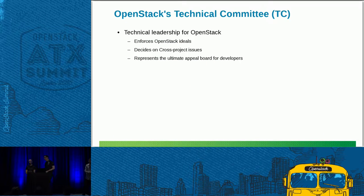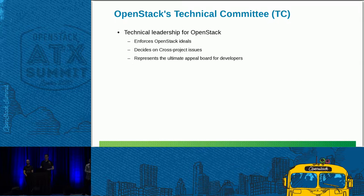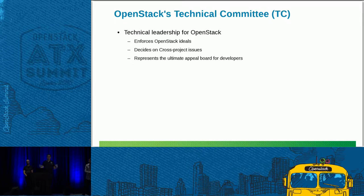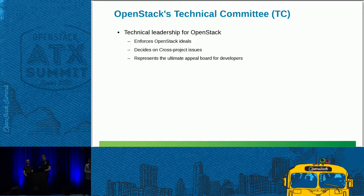When we talk about OpenStack governance, there is the mission statement and also the Technical Committee. The TC is elected by the developers of the OpenStack project and embodies the technical leadership of OpenStack. Its goals are to enforce the OpenStack ideals and decide on arbitrary cross-project issues. It's a body of trusted developers elected by the community, tasked to resolve conflicts, set the mission into implementation, and serve as the ultimate board of conflict resolution.